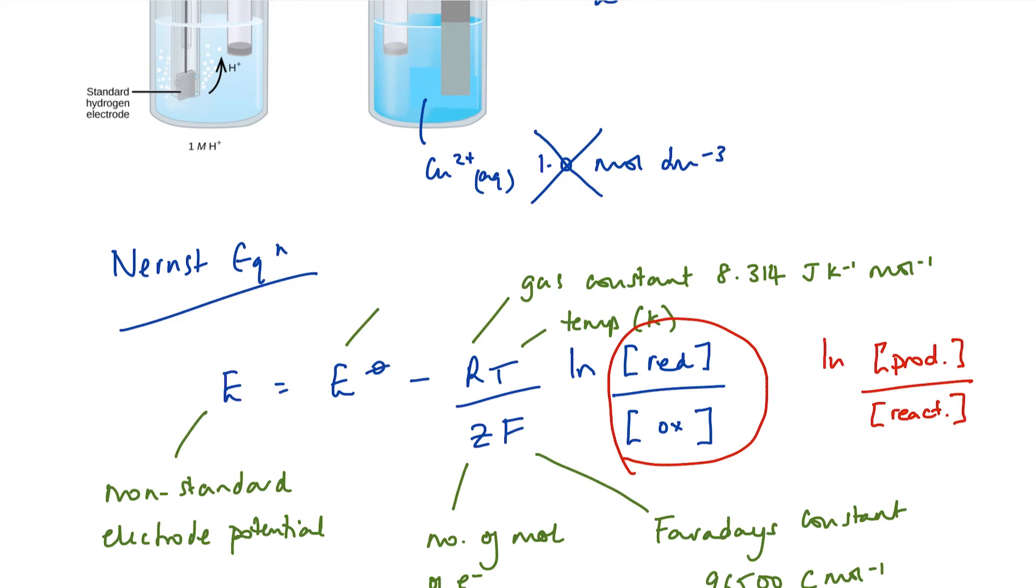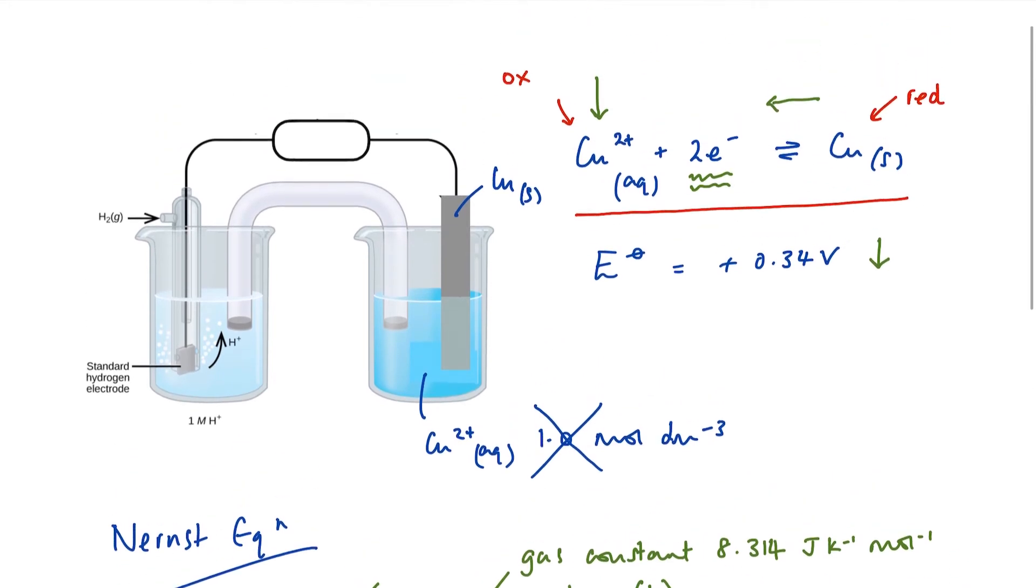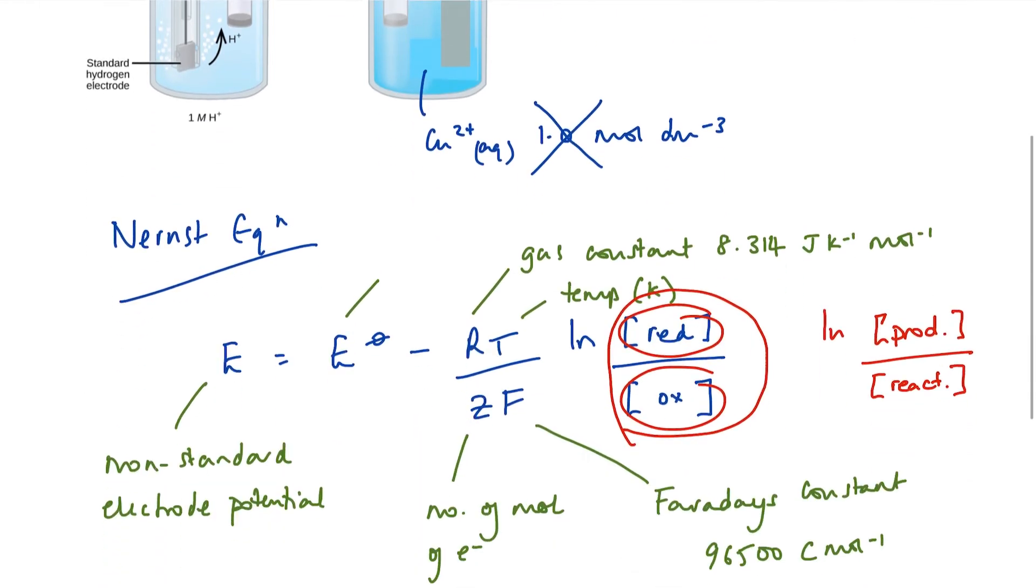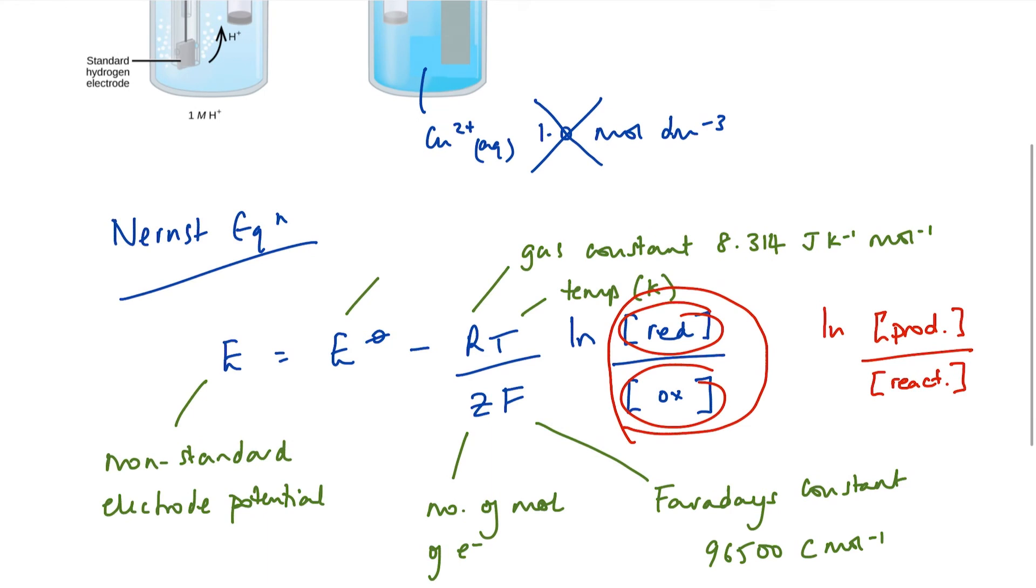I'm not so keen on that because it depends entirely on the way that the equation is written and it might not be the right way around. So reduced over the concentration of the oxidized. Now, to make life nice and simple, our reduced species is a metal. It's a solid. Solids don't have a concentration, so we can declare that to be unity. So the concentration of our products in this case is simply one.